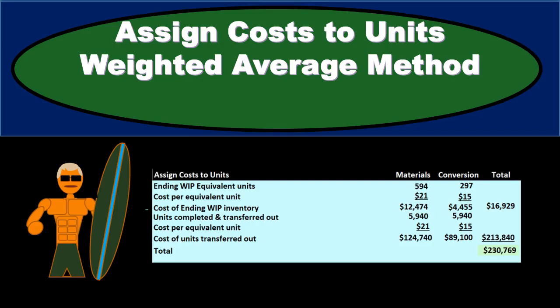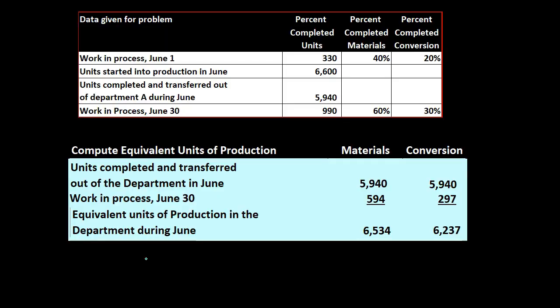In this presentation we will assign costs to units using the weighted average method. We will assign costs to the work in process at the end of the time period and the costs that were transferred out of the department. The total of those two will equal the total costs that we need to account for.